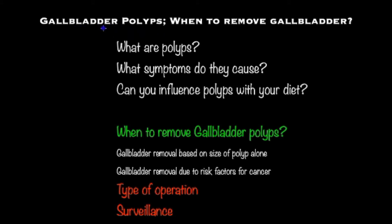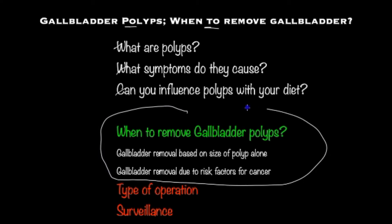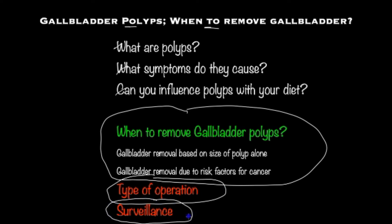If you or your loved one has been diagnosed with a gallbladder polyp and you are concerned about what to do next, then this video will add to the information provided by your healthcare team. I will briefly describe what a polyp is, what symptoms arise from a polyp, and whether you can influence the size of the polyp with your diet. More importantly, when is the right time to consider removal of the gallbladder, what type of operations are performed for gallbladder polyps, and if you do not need the gallbladder removed, what is the advice on future surveillance to reduce the risk of malignancy.